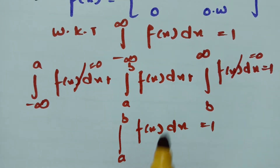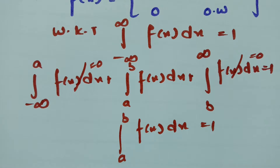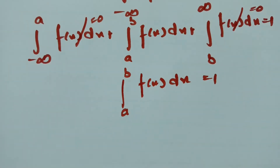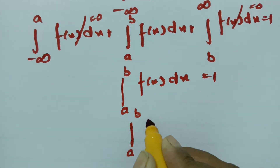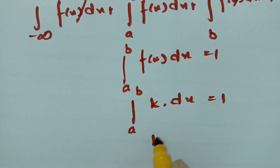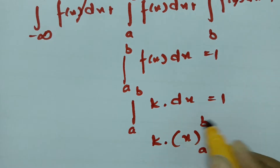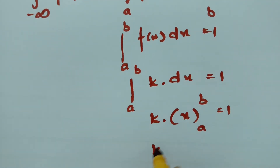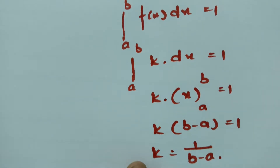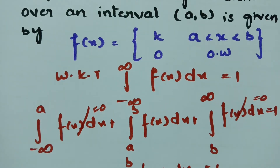Since f(x) equals the constant k between a and b, substituting gives the integral from a to b of k dx equals 1. Since k is constant, this becomes k times [x] evaluated from a to b equals 1, so k times (b minus a) equals 1, giving k equals 1/(b minus a).